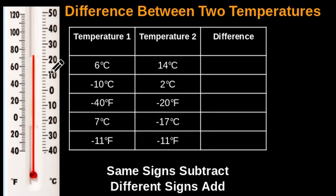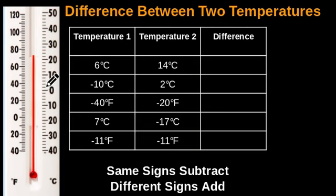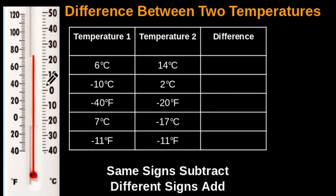Here we have zero, and the next whole number reading is 10. So let's count each line in increments of one: one, two, three, four, five. No — we have 10 here, so this thermometer wasn't graduated with increments of one. So let's try two: two, four, six, eight, 10. So that's it. This thermometer was graduated in increments of two, meaning each line reads two.